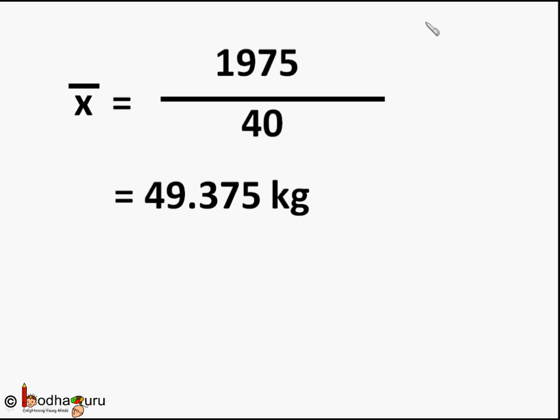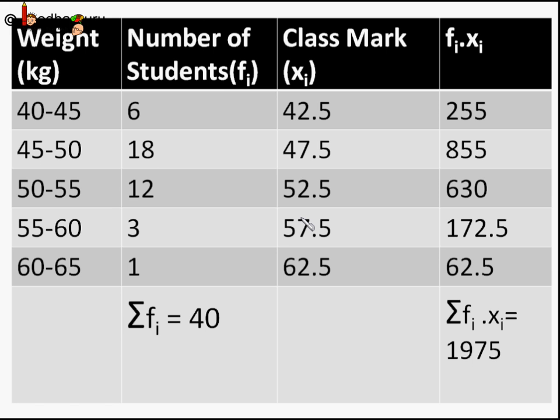So the mean would be 1975, that is Σfixi, divided by 40, which is Σfi, which will be 49.375 kg. That is, the mean weight of the class is 49.375 kg.